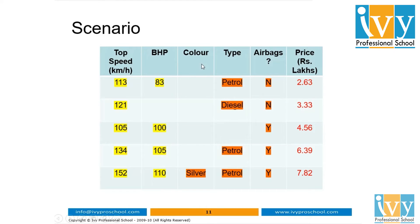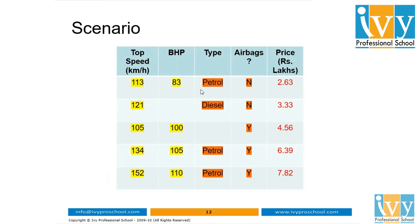Then we check if any columns contain a maximum of missing values. BHP, color, and type contain missing values, but color contains only one non-missing value and the majority are missing. In exploratory data analysis, if more than 30 percent of data is missing from a column, we drop that column from the dataset.